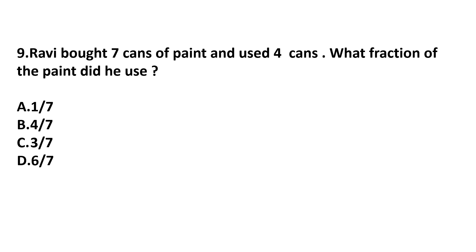Question 9: Ravi bought seven cans of paint and used 4 cans. What fraction of the paint did he use? Total cans are 7 and he used 4, so the fraction is 4/7. Answer: option B.